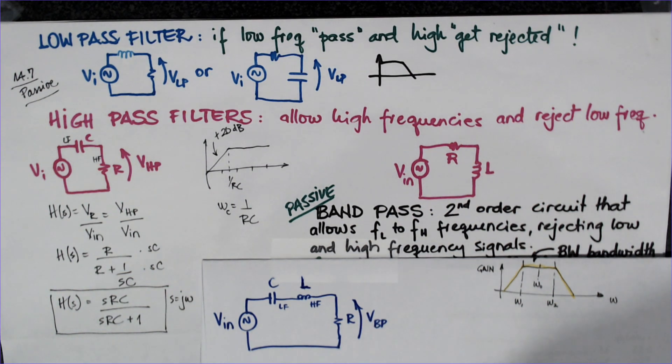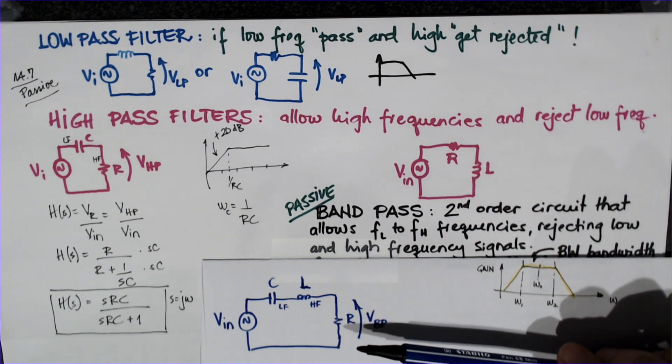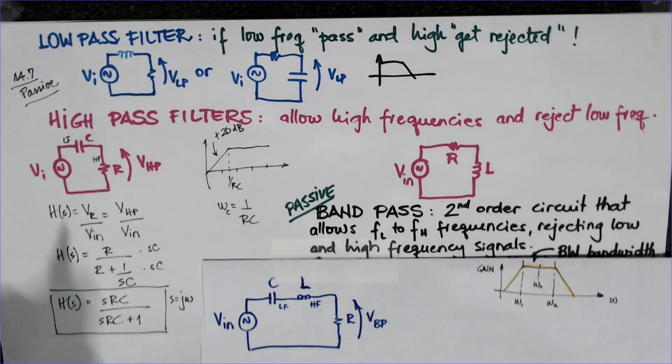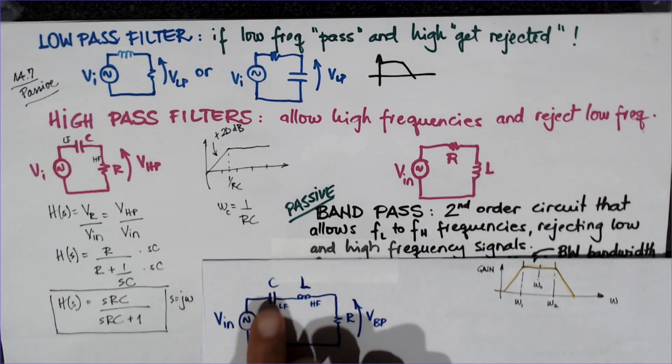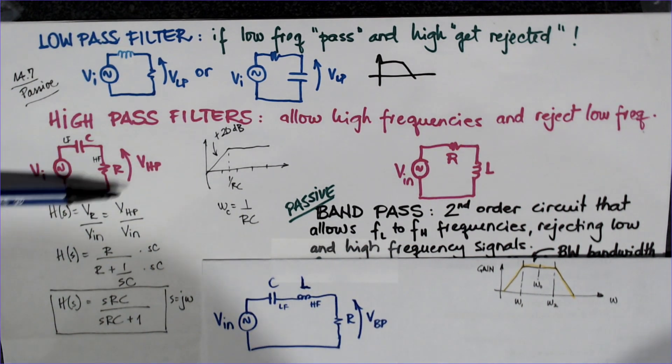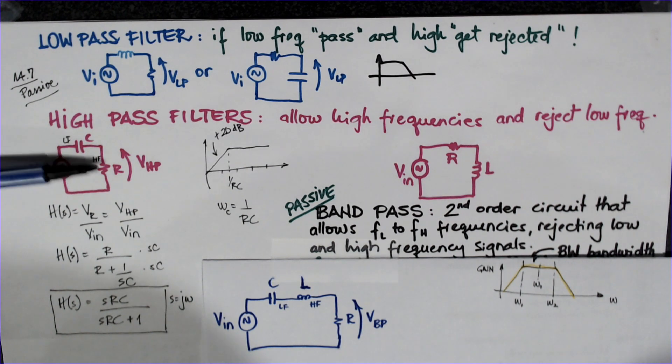This will be the last video about section 14.7, passive filters, and this is the second kind of band-pass filter we'll look at. It's a different combination of low-pass and high-pass filters. In a high-pass filter, the resistor takes the high frequencies while the capacitor holds on to the low frequencies. If you put an oscilloscope here, you see the low frequency energy or signals.